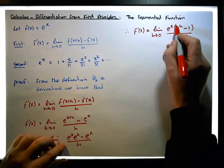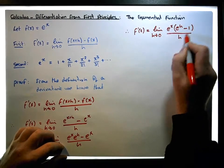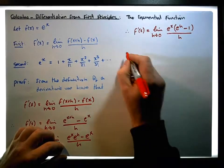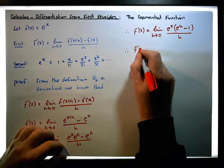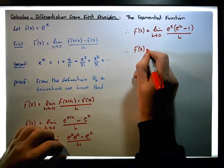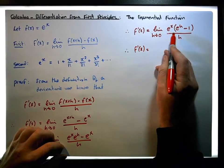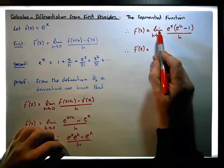So this is effectively a product of e to the x times this particular quotient. Therefore f prime of x is equal to — and we can distribute the limit, since the limit of a product is the same as the product of the limits.